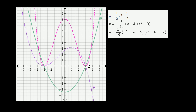We have three functions graphed here. We have f of x graphed in dotted magenta, g of x in green, and h of x in dotted purple. We also have three potential equations that could be used to define functions, and we want to think about which of these equations match up to which of these function graphs.